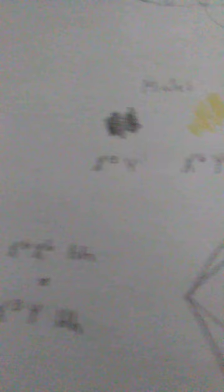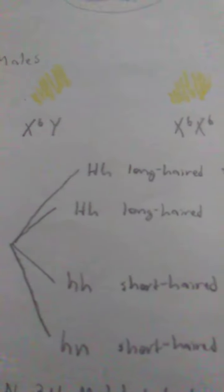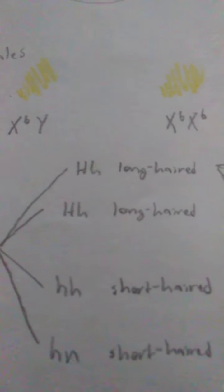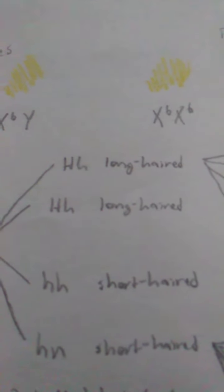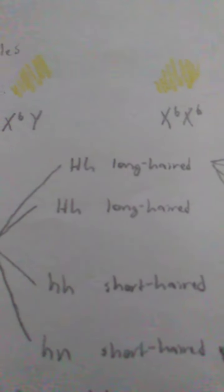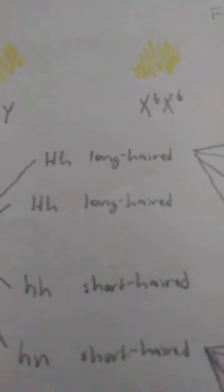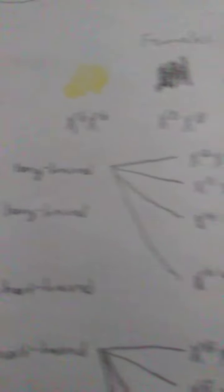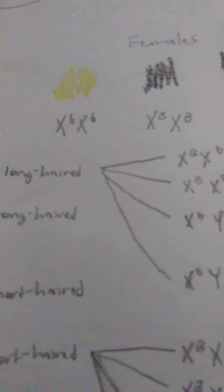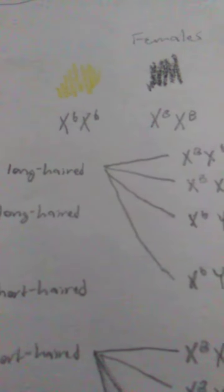As you can see here, half the offspring have big H, small h combinations, which give long hair, and the other half have double small h, which gives short hair. Because the males only take the X chromosome from their mothers, they each get yellow-orange. The females, however, get both alleles, causing them to be multicolored.